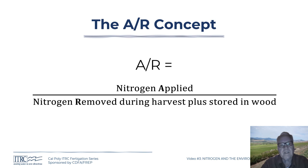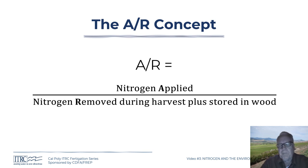In the early days of looking at nitrogen management and groundwater nitrate concentrations, when regulatory boards were considering regulations, I chaired an agricultural expert panel that developed the concept of the A-over-R, or A:R ratio. The basic idea is: if you could apply the same amount of nitrogen as was removed during harvest plus stored in the wood, those being equal would give an A:R ratio of one — meaning 100 percent efficiency.